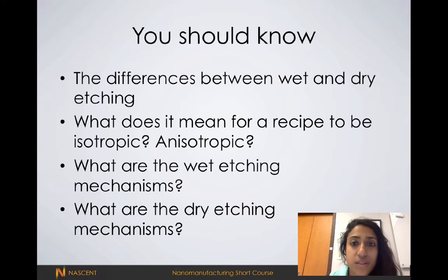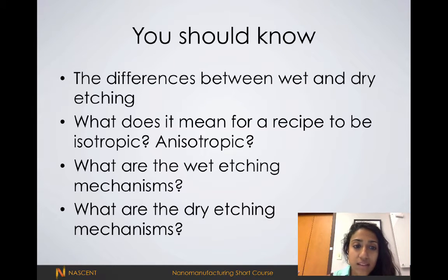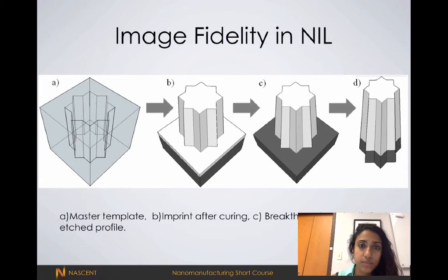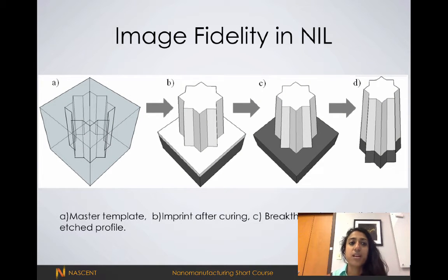At the end of this lecture, you should know the differences between wet and dry etching, what it means for a recipe to be isotropic or anisotropic, and what the different wet etching mechanisms and dry etching mechanisms are. First we're going to talk about some of the main issues with etching and some of the obstacles we're trying to combat.